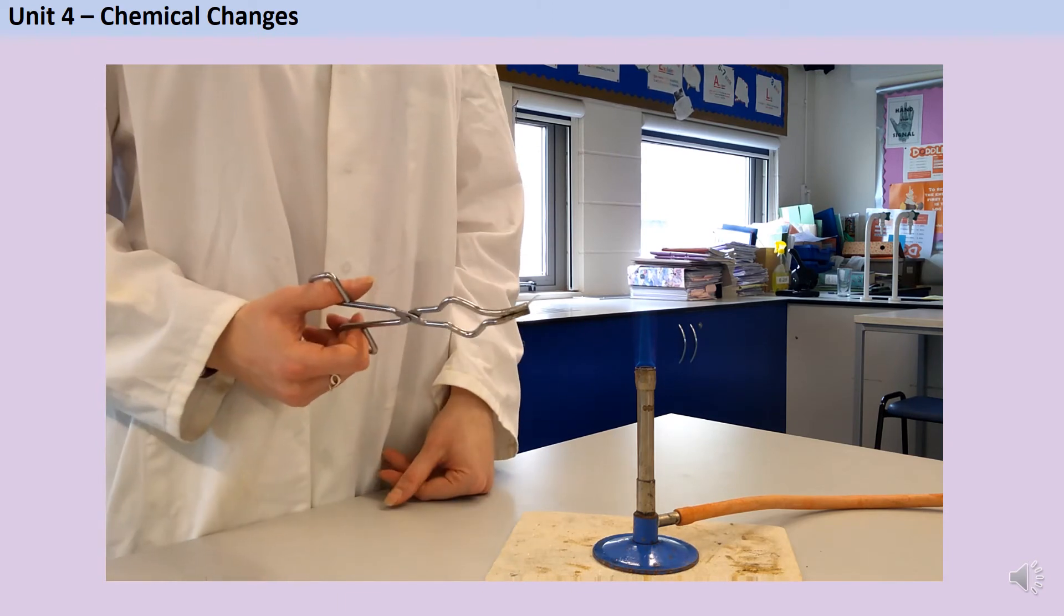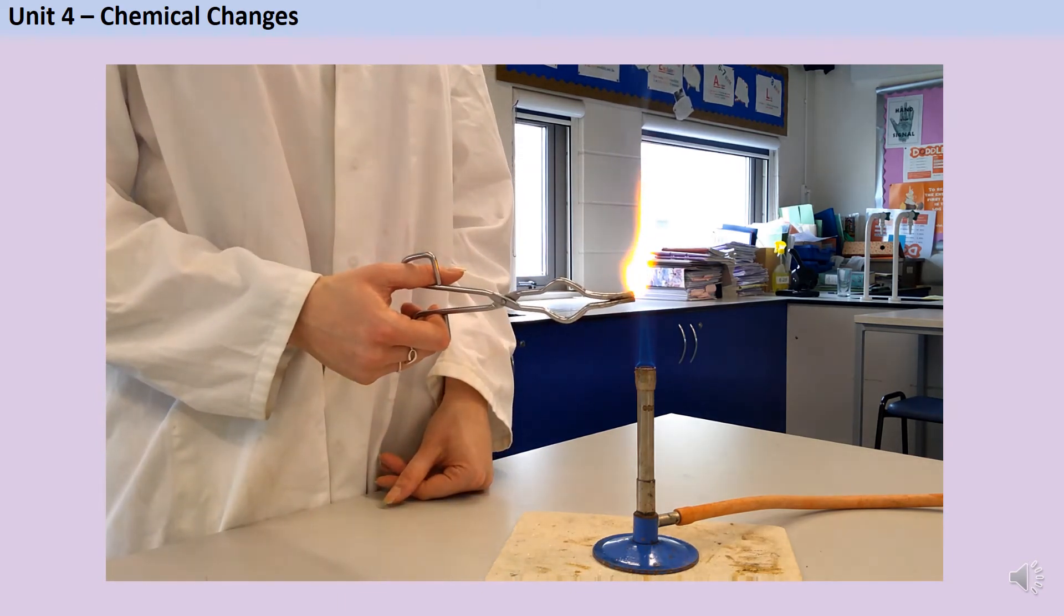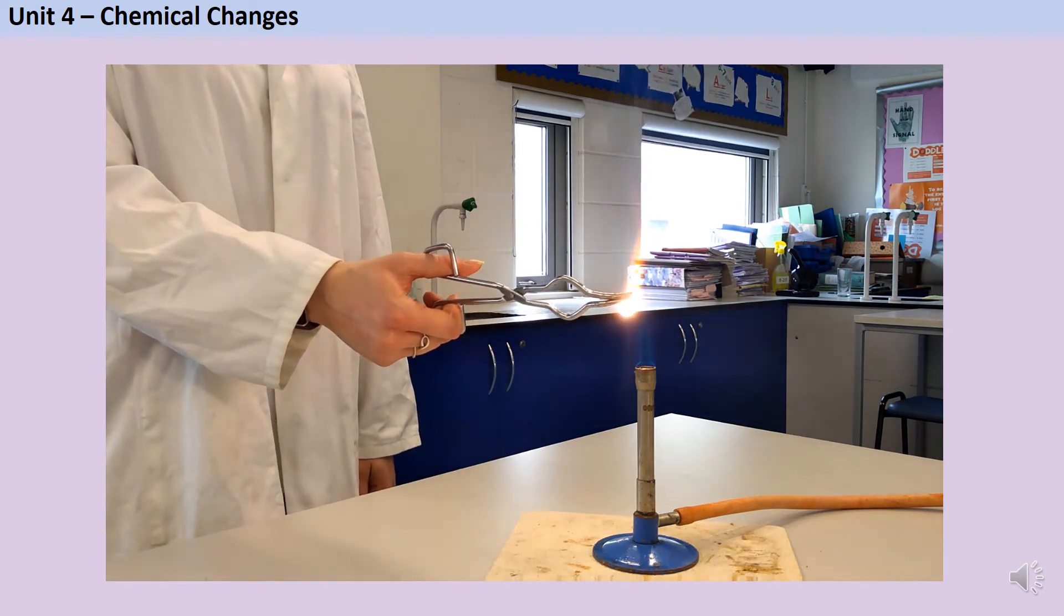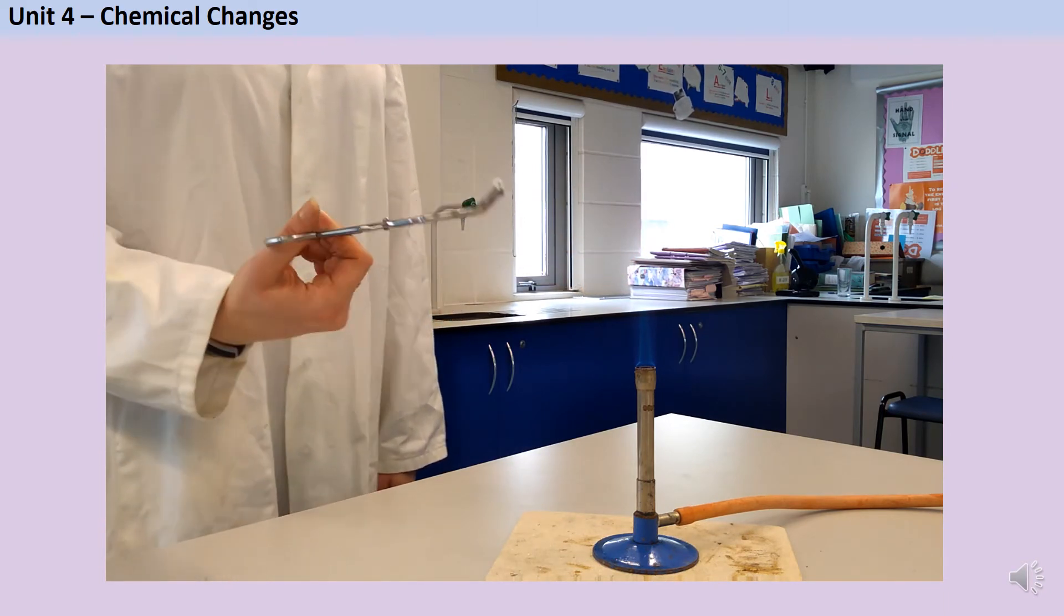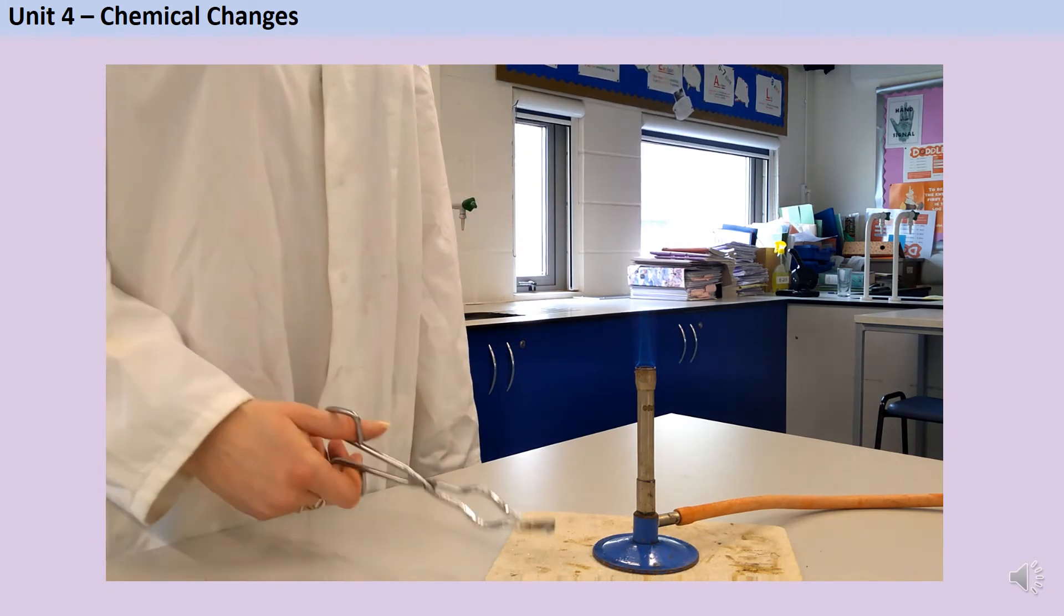I'm now going to do the same thing with my magnesium. And as soon as I put this into the Bunsen burner, we can immediately see that magnesium is much more reactive. It transfers a lot of energy as light. And you can see that again, I've made a metal oxide. This time, this white magnesium oxide.